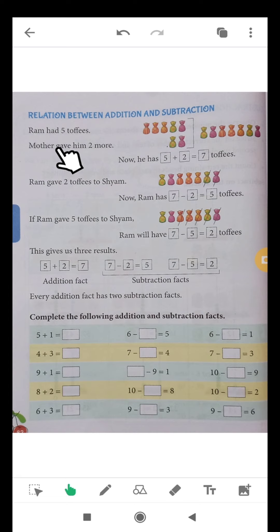First, Ram had five toffees. Mother gave him two more. Ram had five toffees, five chocolates. Ram gave two toffees to Shyam.